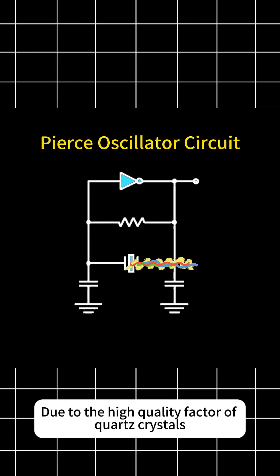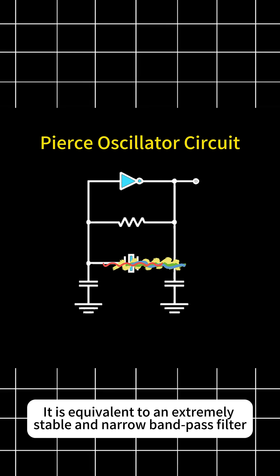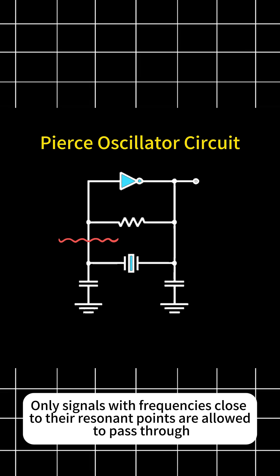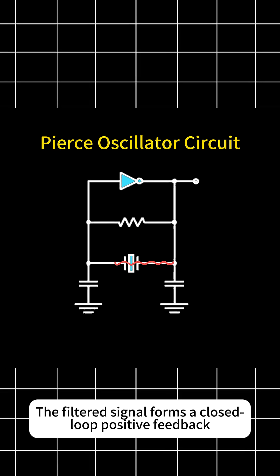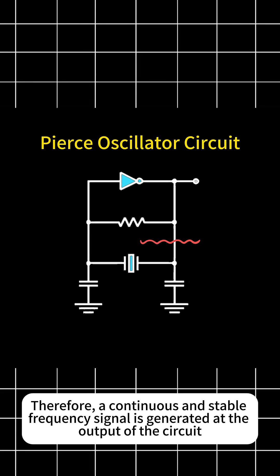Due to the high-quality factor of quartz crystals, it is equivalent to an extremely stable and narrow bandpass filter. Only signals with frequencies close to their resonant points are allowed to pass through. The filtered signal forms a closed-loop positive feedback. Therefore, a continuous and stable frequency signal is generated at the output of the circuit.